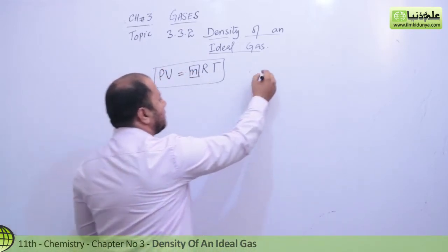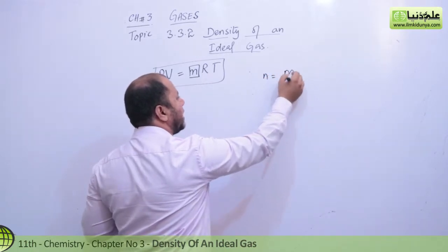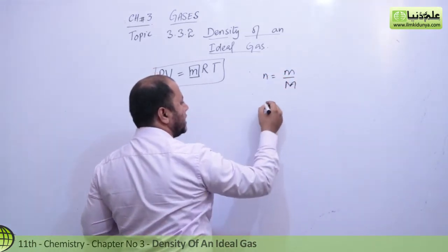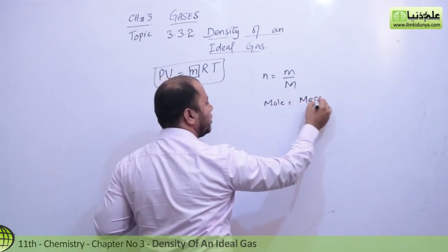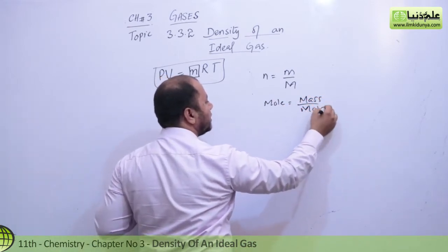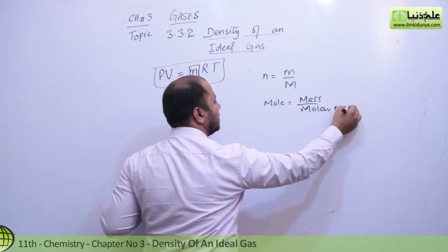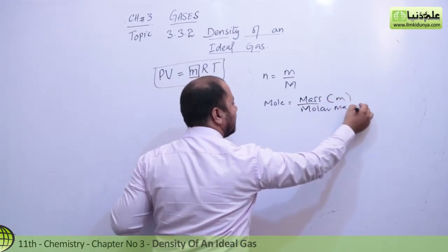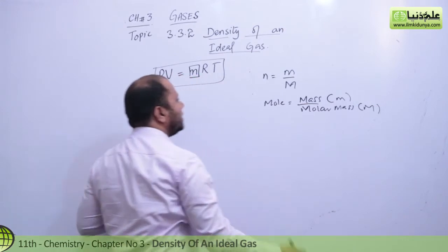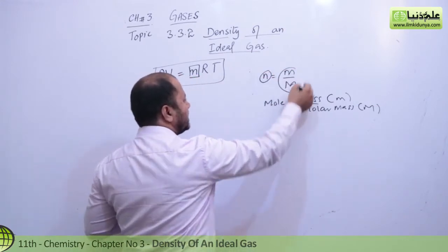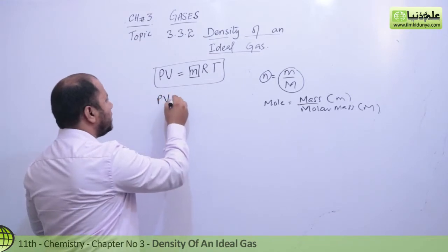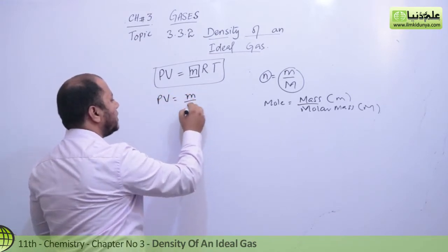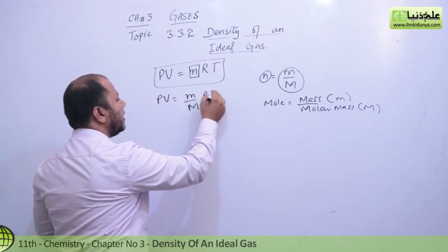You should know that n is mass over molar mass. Recently in chapter number one you learned the formula for mole: n equals mass over molar mass. Mass can be written in small m and molar mass in capital M. So you can replace n with this value: mass over molar mass. So PV equals m over capital M into RT, right?